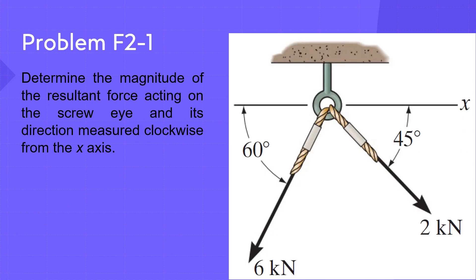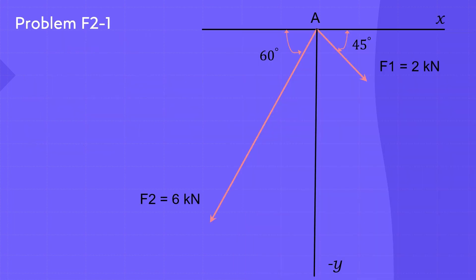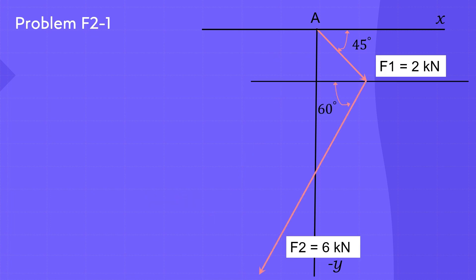Let us now solve problem number F2-1 in the second chapter. For the system of forces acting on the screw eye shown in the figure, determine the magnitude of the resultant force and its direction measured clockwise from the x-axis. The first step is to draw the free-body diagram representing this system of forces. Now move F2 so its tail overlaps the head of F1, then draw an arrow representing the resultant force starting from A and ending at the head of F2. This forms triangle ABC.